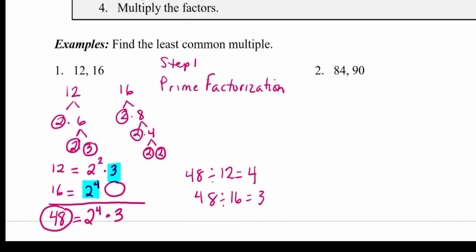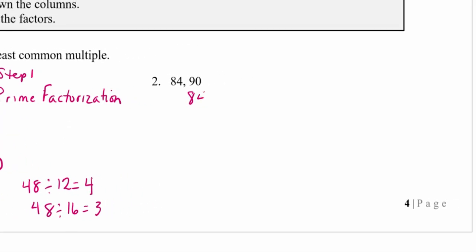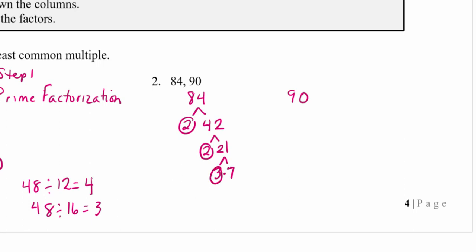Let's look at a second example: 84 and 90. Setting up the prime factorization for 84: 2 goes into 84 forty-two times, then 2 goes into 42 twenty-one times, then 3 goes into 21 seven times. So the prime factorization of 84 gives us two 2s, one 3, and one 7 — written as 2 squared times 3 times 7.